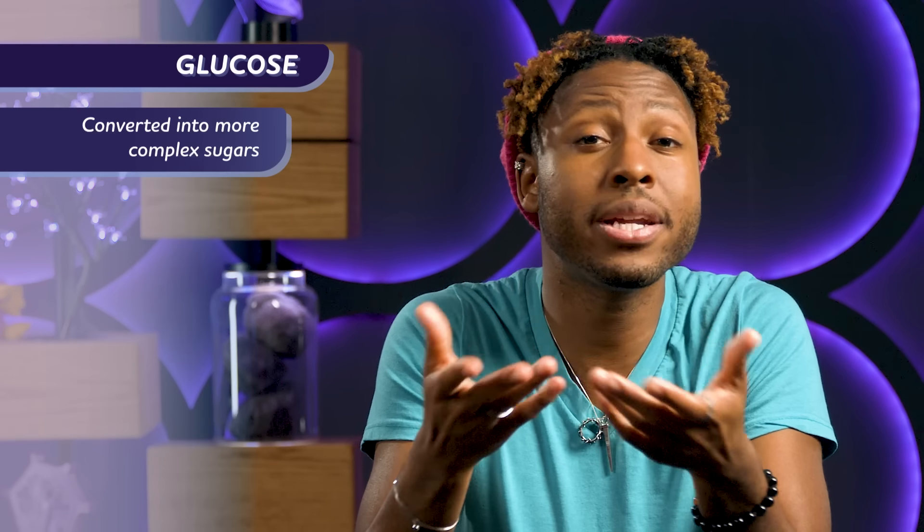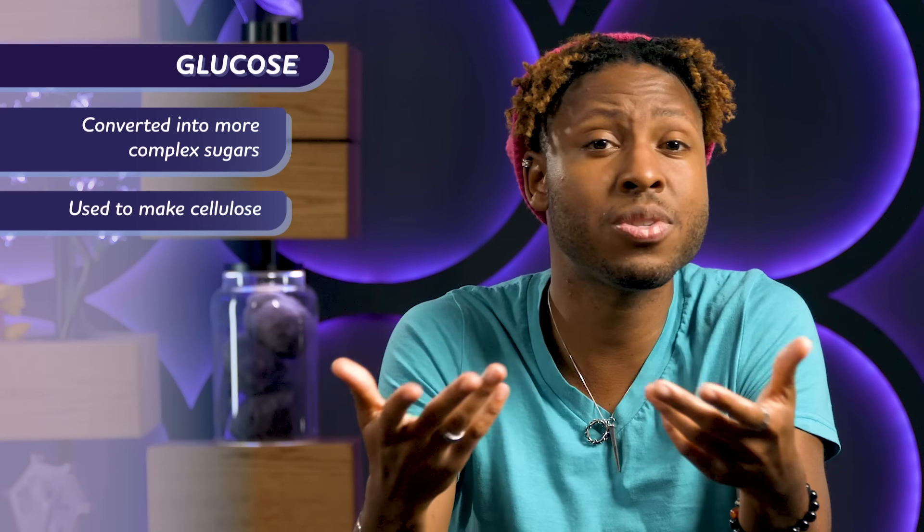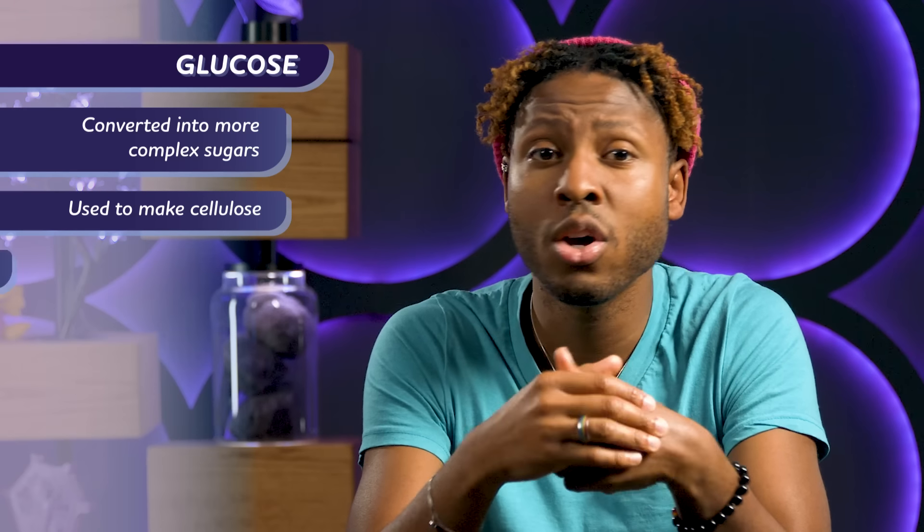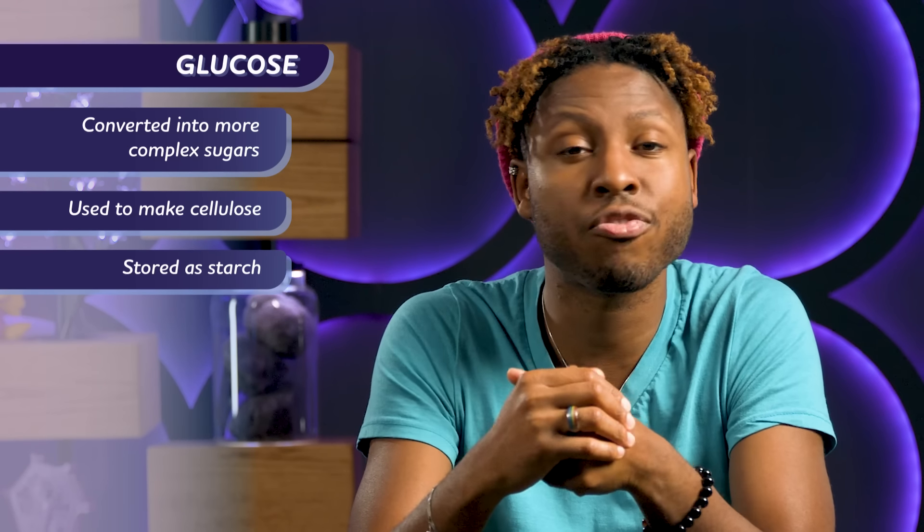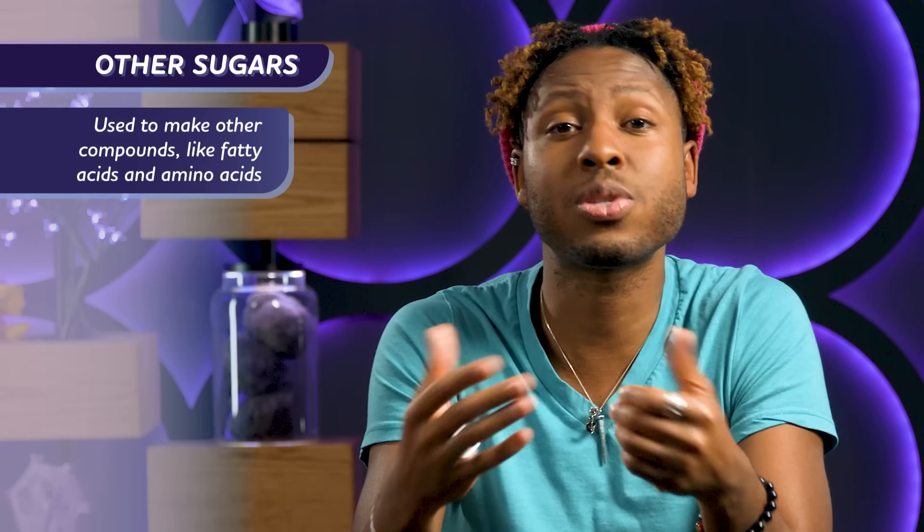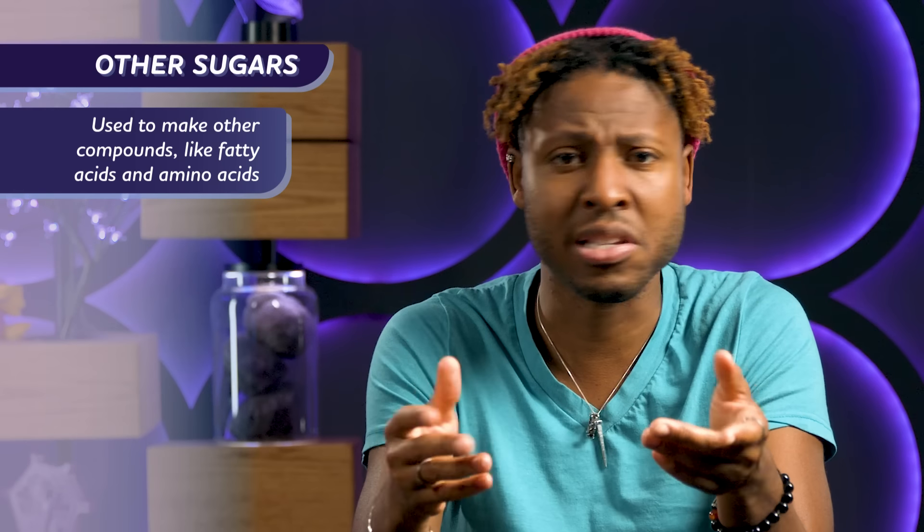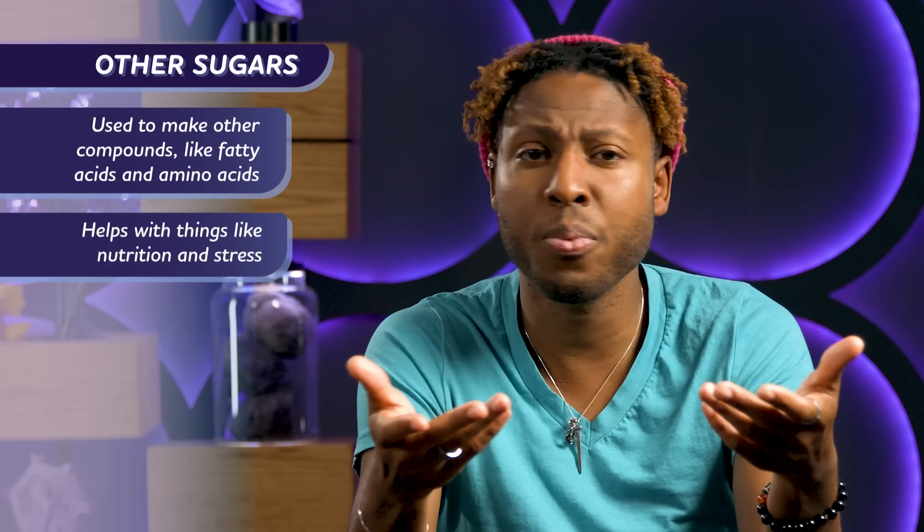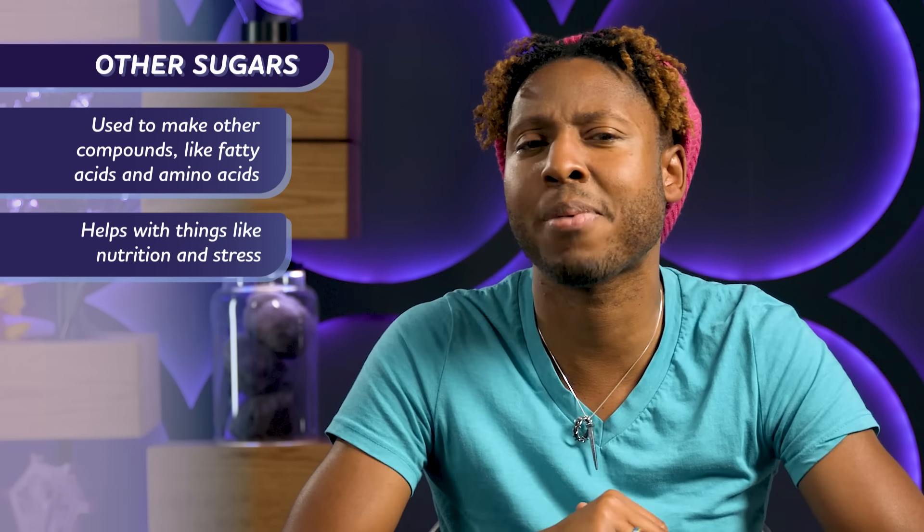Some, like glucose, are converted into more complex sugars that they can use to make cellulose in a plant cell wall, or store for use later in the form of starch. Others are used to make different compounds that the organism needs, like fatty compounds and amino acids, which can help with things like nutrition and stress responses.